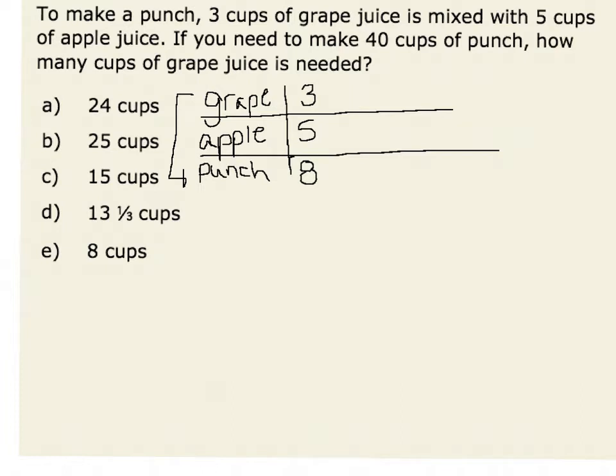I would now recognize that I need 40 cups of punch. Originally, if I had a mixture of three cups grape and five cups apple, I would have eight total cups. Therefore, I need five times that amount of punch. Multiplying eight by five would give me my desired 40 cups of punch.